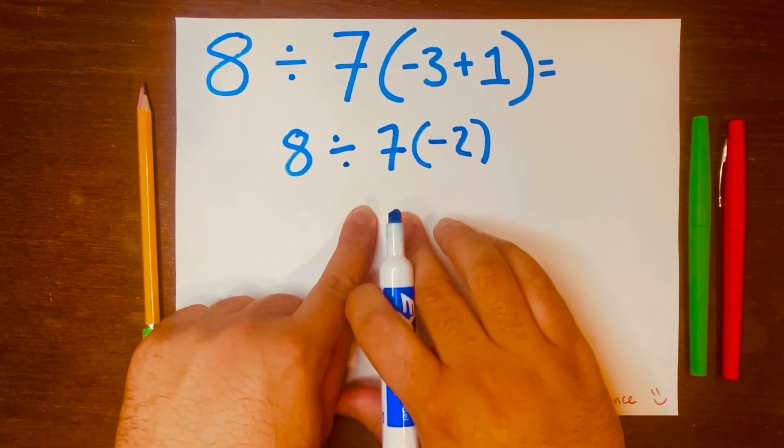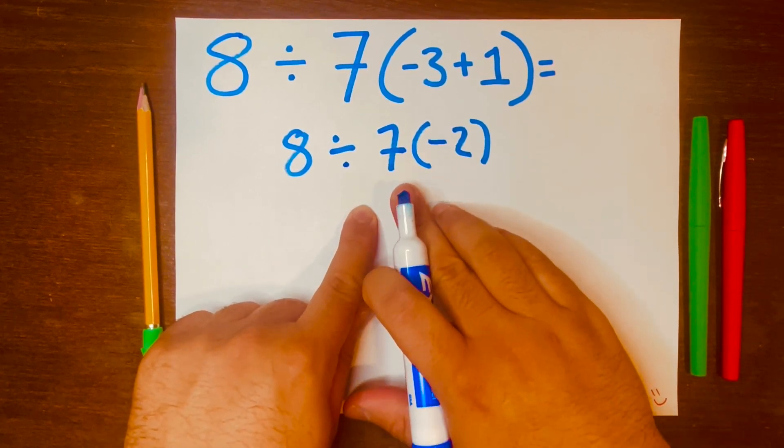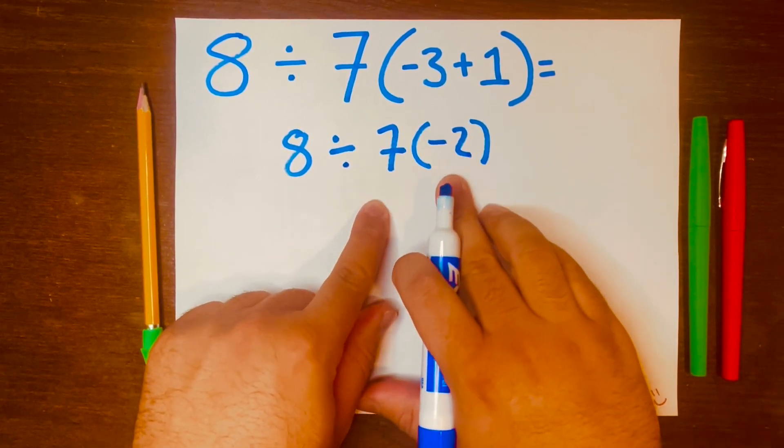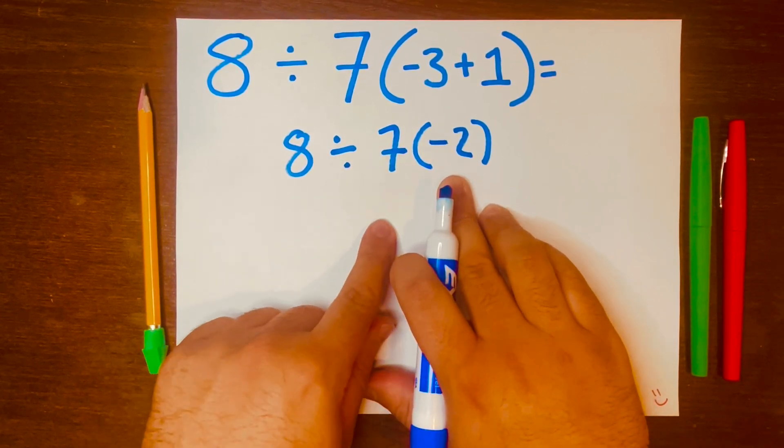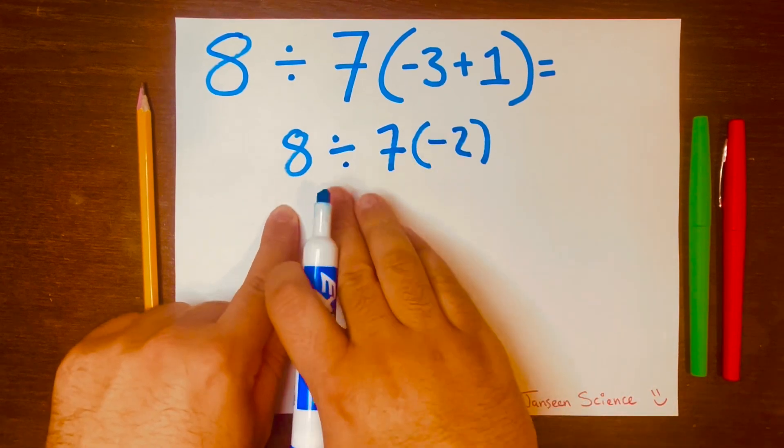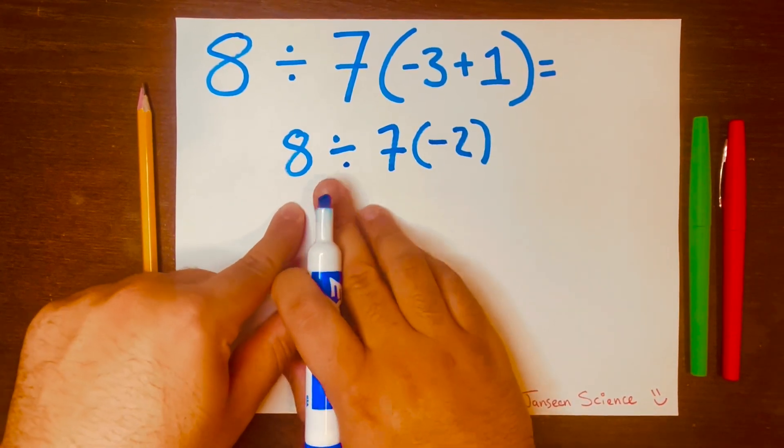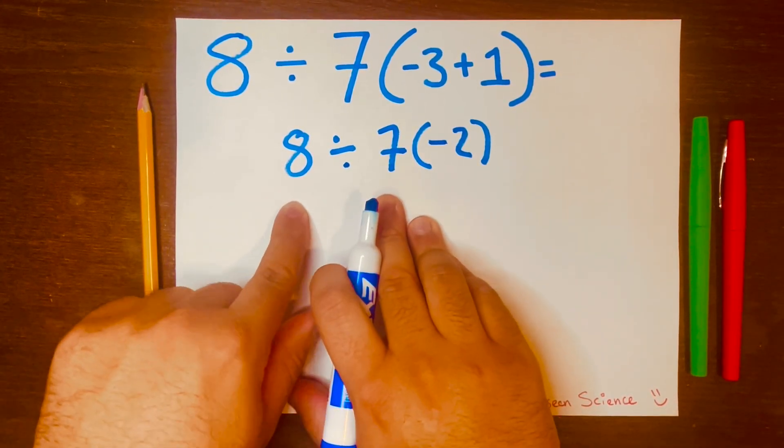This is where it gets tricky. Some people will start 7 times negative 2, and that's not right. You work from left to right, not right from left. And some people will get stuck with the 8 divided by 7, and we don't need calculators.